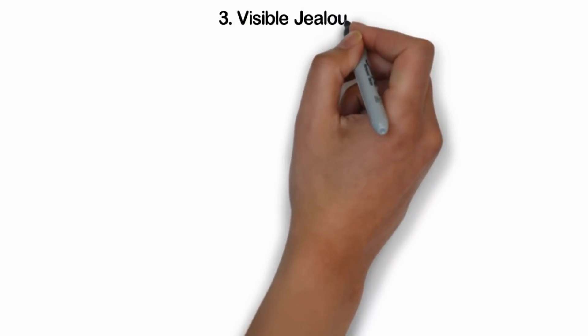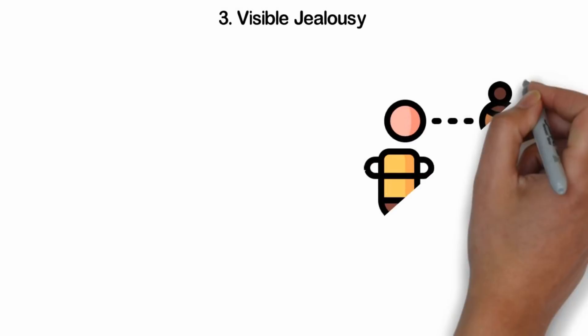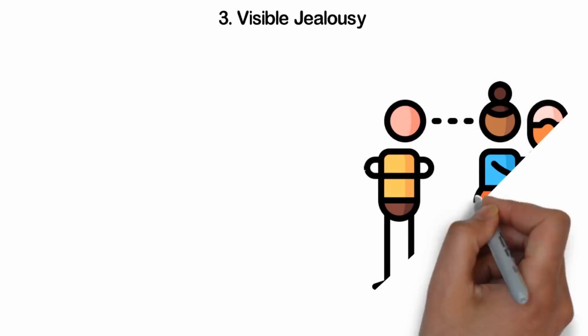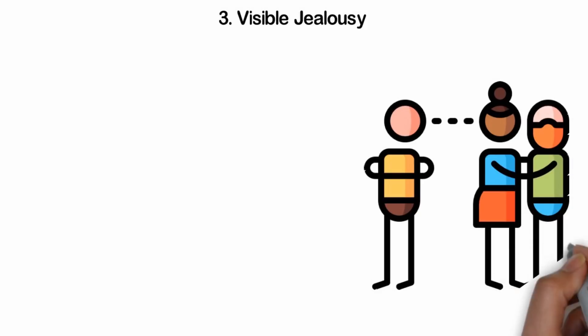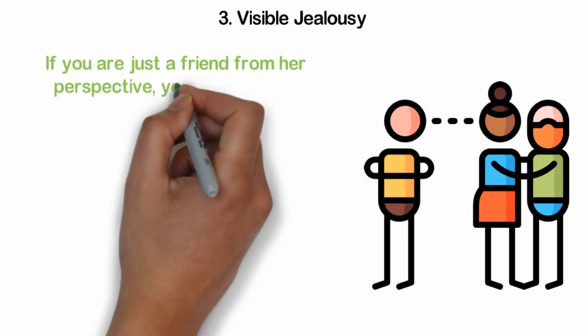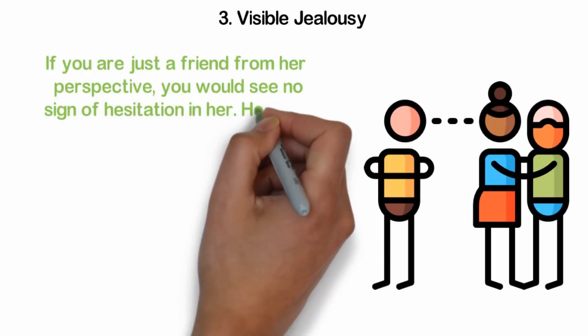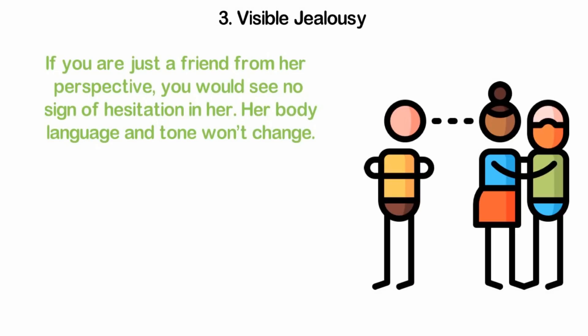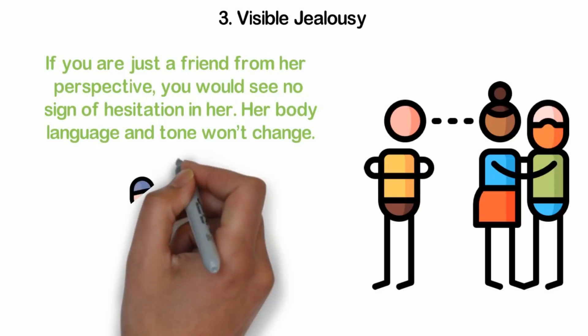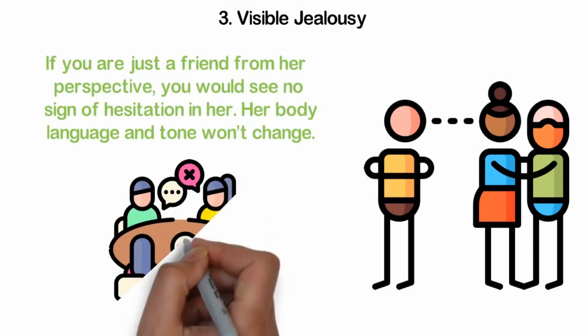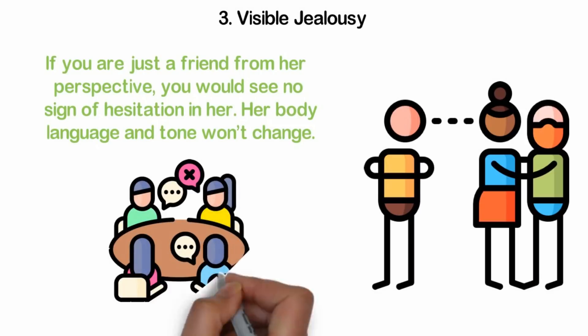Number three, visible jealousy. Having a ring on her finger isn't going to stop her from being jealous of others. Do you see her getting visibly irritated when you are talking to another woman? It could also be the opposite. She might be a little too chill about it, almost sending you to talk to other women to see how you react. If you are just a friend from her perspective, you would see no sign of hesitation in her. However, if she's openly hostile towards other women you talk to, then that's a big, big sign. If your attempt at hooking up with other people is somehow always getting spoiled by this woman, then you know the reason.